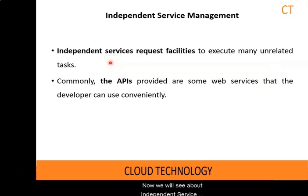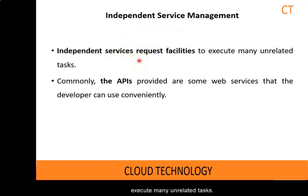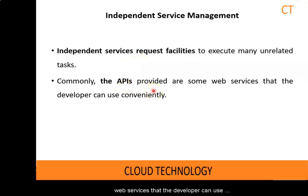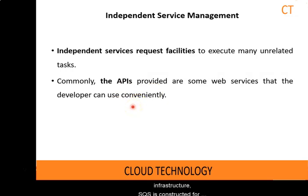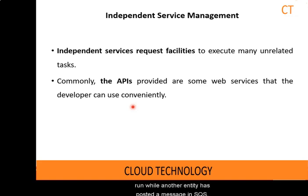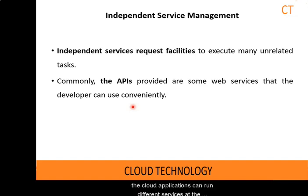Now we will see about independent service management. Independent service requests facilities to execute many unrelated tasks. Commonly, the APIs provided are web services that the developer can use conveniently. In Amazon Cloud Computing Infrastructure, SQS is constructed for providing reliable communication service between different providers. Even if the endpoint does not run while another entity has posted a message in SQS, by using independent service providers, the cloud application can run different services at the same time. Some other services are used for providing data other than compute or storage services.